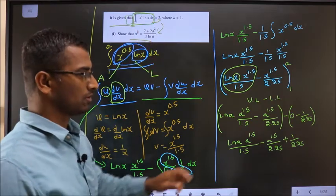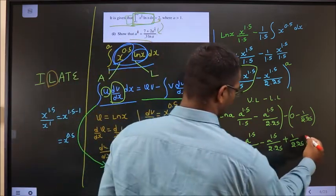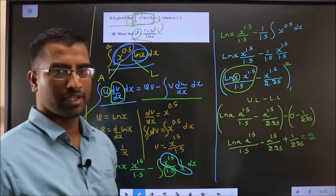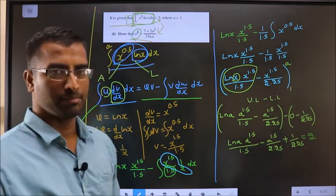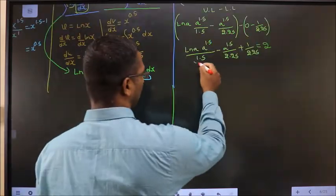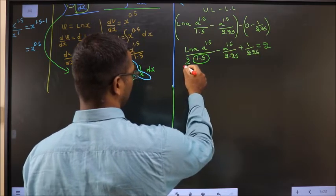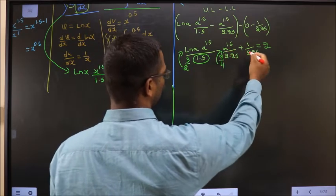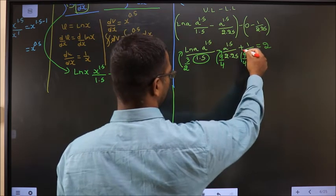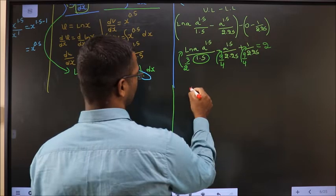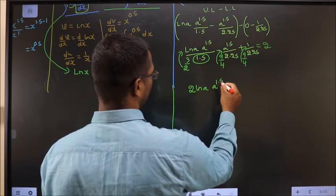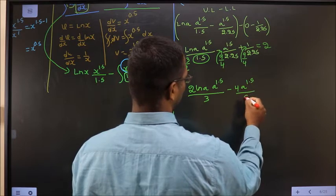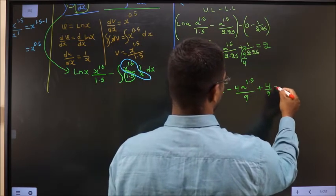This value is equated to 2 as given. Now rewrite using fractions: 1.5 = 3/2 (so the 2 goes up), and 2.25 = 9/4 (so the 4 goes up). This gives: 2·ln(a)·a^(1.5)/3 − 4·a^(1.5)/9 + 4/9 = 2.